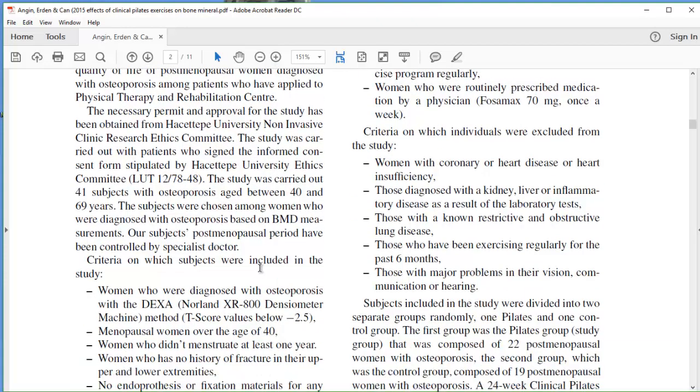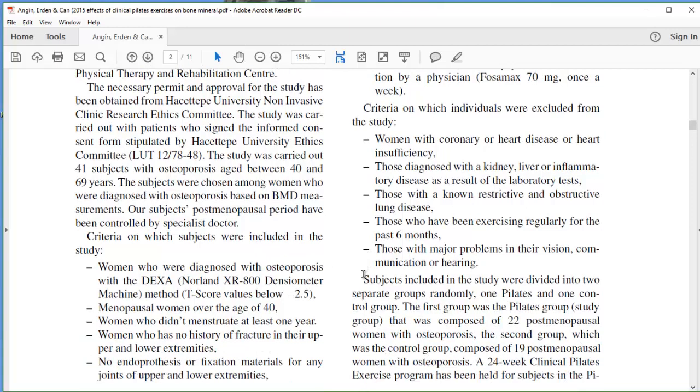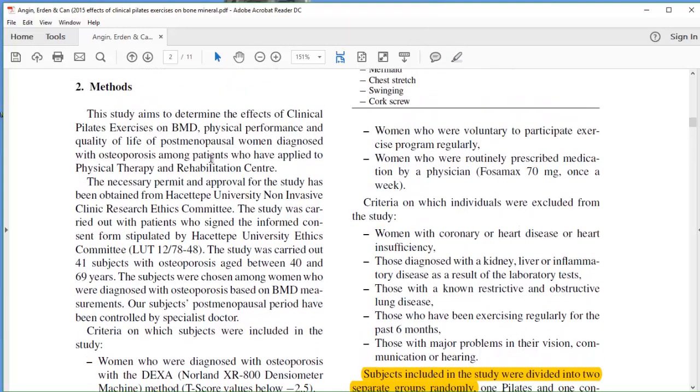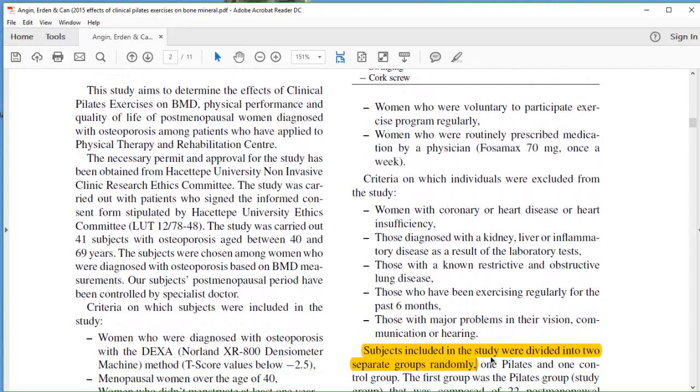So they do have their enrollment criteria, and actually I'm going to pop over right here to say here's my randomization. Generally speaking, this sentence is going to appear earlier in the methods section. They randomly divided the subjects into two groups: one Pilates and one was a control group. So this is a randomized control trial. That should go right up here. This randomized control trial aims to, etc. So got to find it in here somewhere.